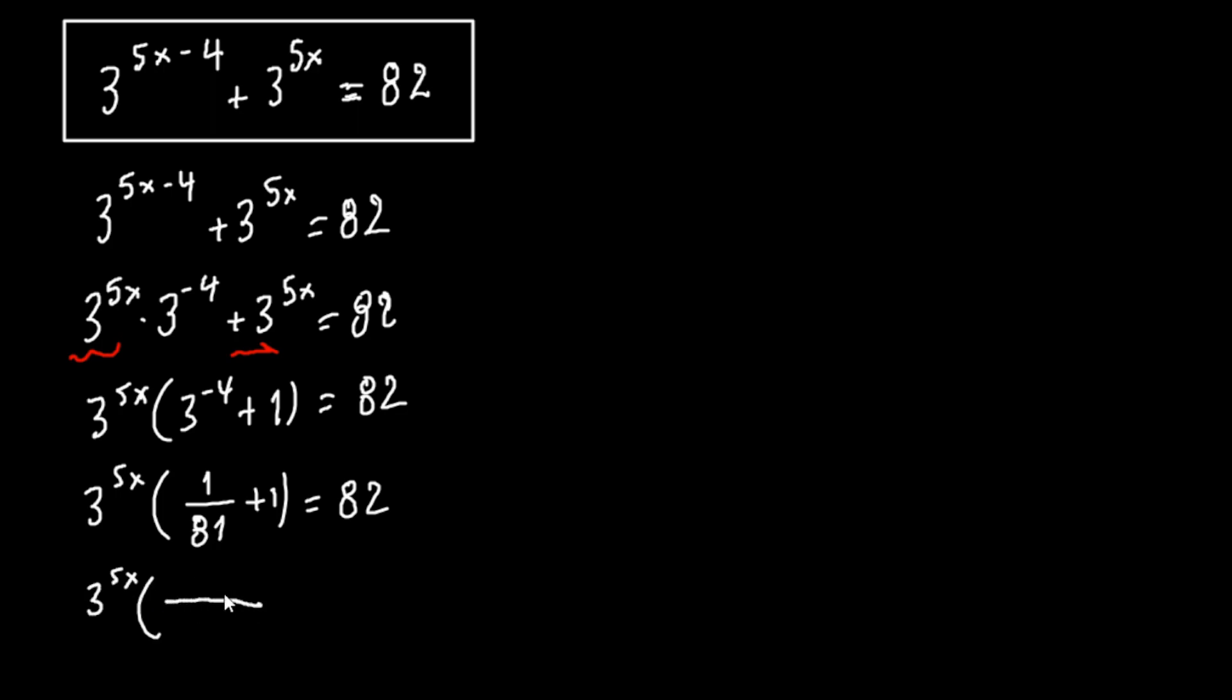Here we have 1 plus, we want to have the same denominator, 1 can be written as 81 over 81. So we have the same denominator equals to 82.